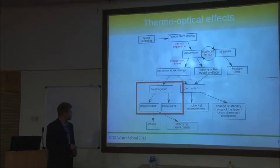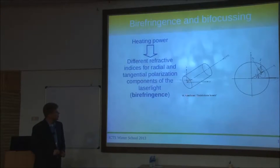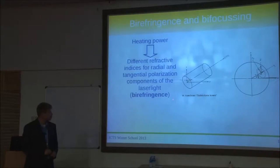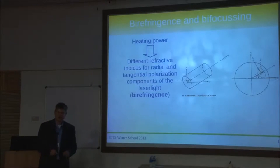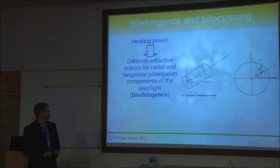Another effect that occurs is birefringence. Looking at the front of a Neodymium YAG crystal, you can describe the index of refraction for the radial direction and the tangential component as a refractive index ellipsoid. Neodymium YAG is a cubic crystal and is isotropic, so without pumping the ellipse is actually a circle no matter where you are. This starts to change once you put heat into the material, because the change in refractive index caused by heat is different for the radial and tangential directions, so the circle becomes an ellipse — that's birefringence.